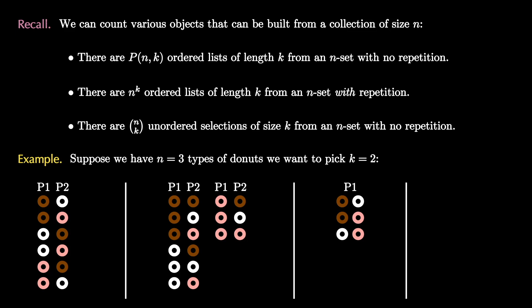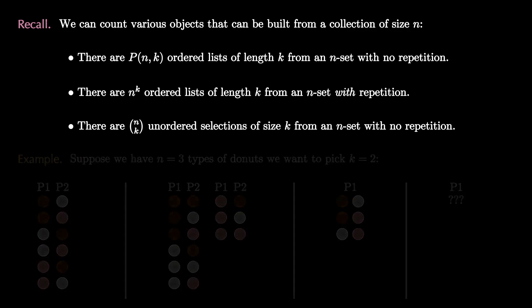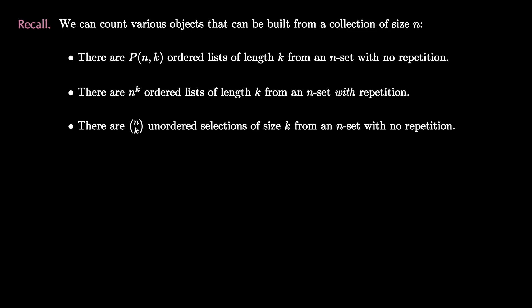But this raises another question. Couldn't one person want two donuts of the same type, say two chocolates or two strawberries? How can we count how many ways there are for one person to select two donuts if they might be allowed to have two of the same type of donut? The more general version of this question is how many unordered selections are there of size k from an n-set where we allow repetition.